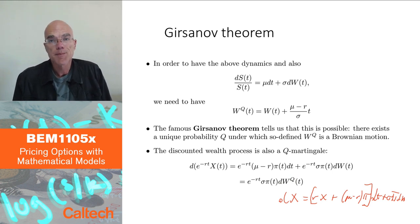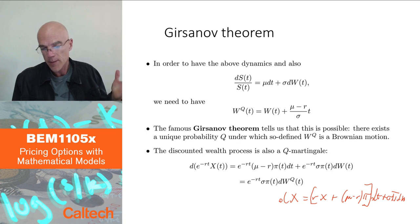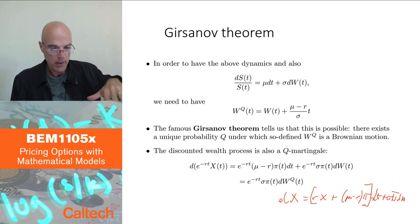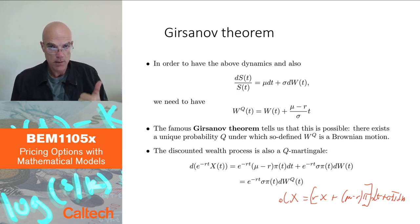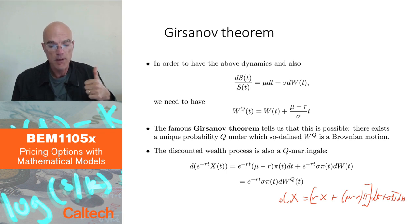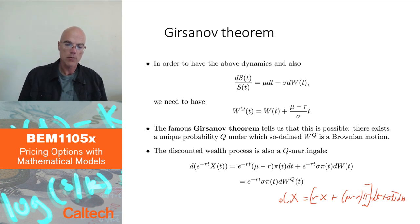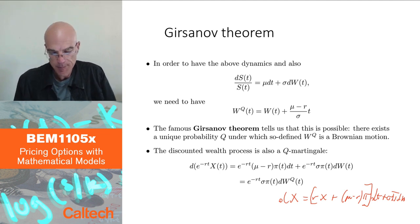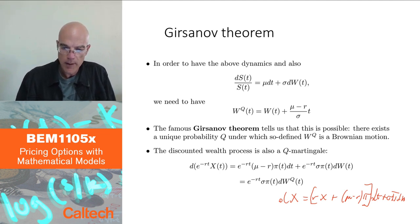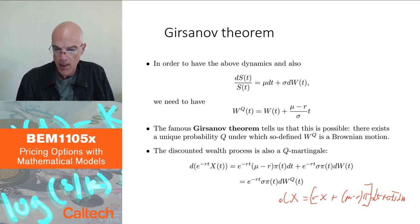By those meta-theorems, the Black-Scholes-Merton model has no arbitrage because there exists a martingale measure, and it is also complete — we can replicate any claim in the BSM model by trading in the stock and the bank account. Now we know how the stock looks under the risk-neutral pricing probability, and we can price options.